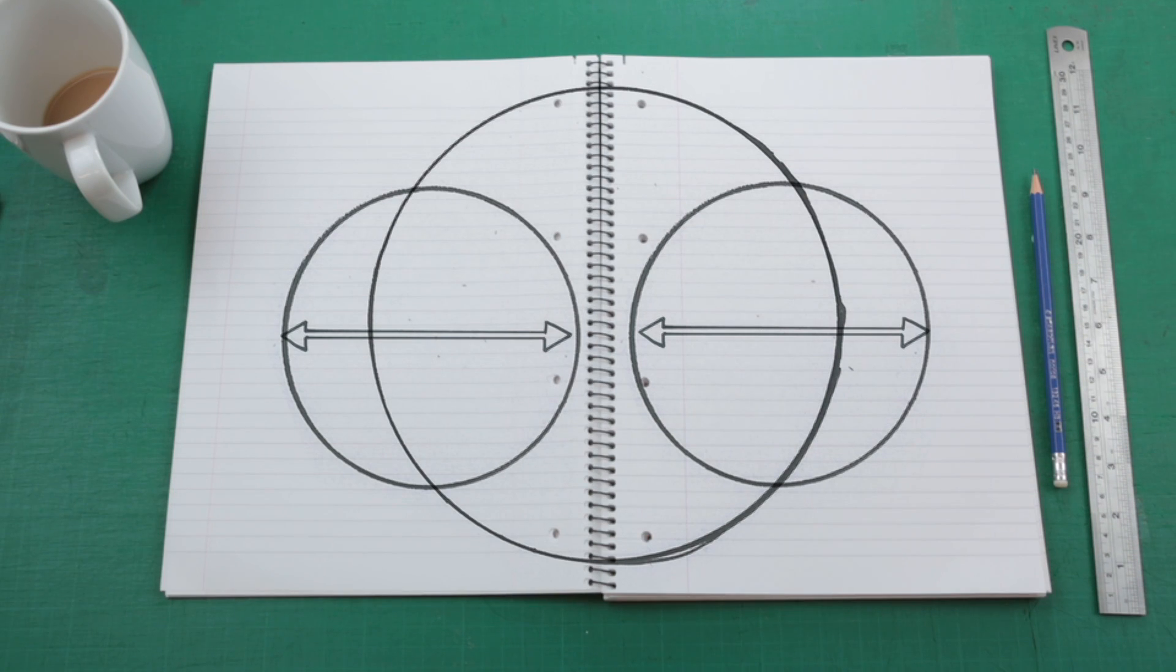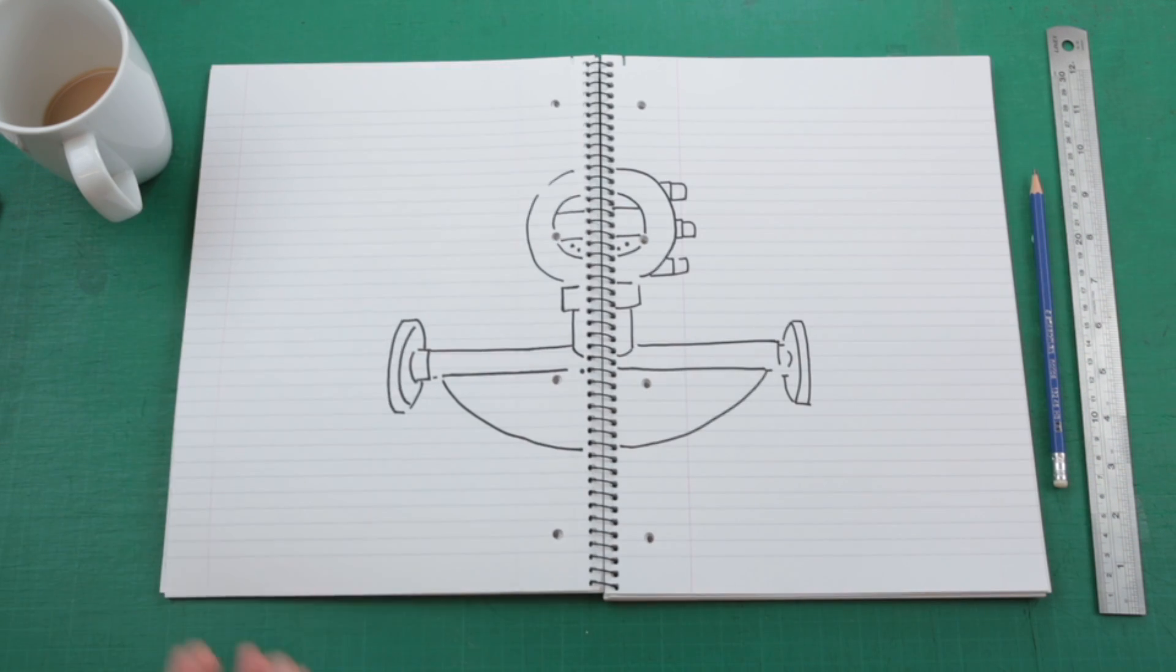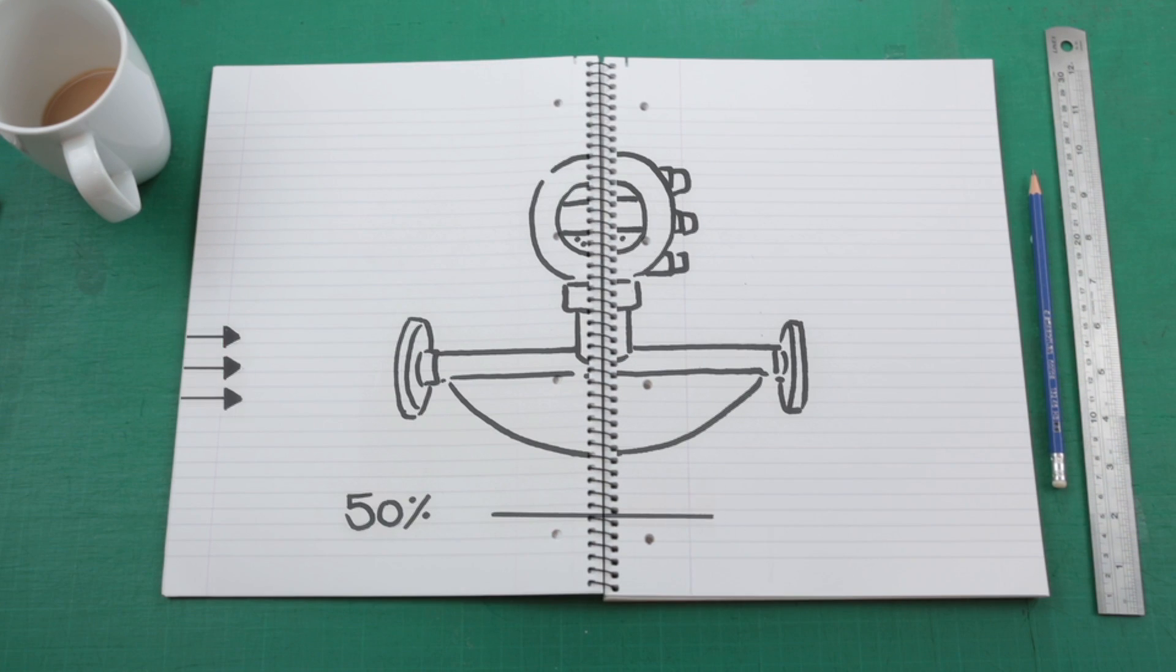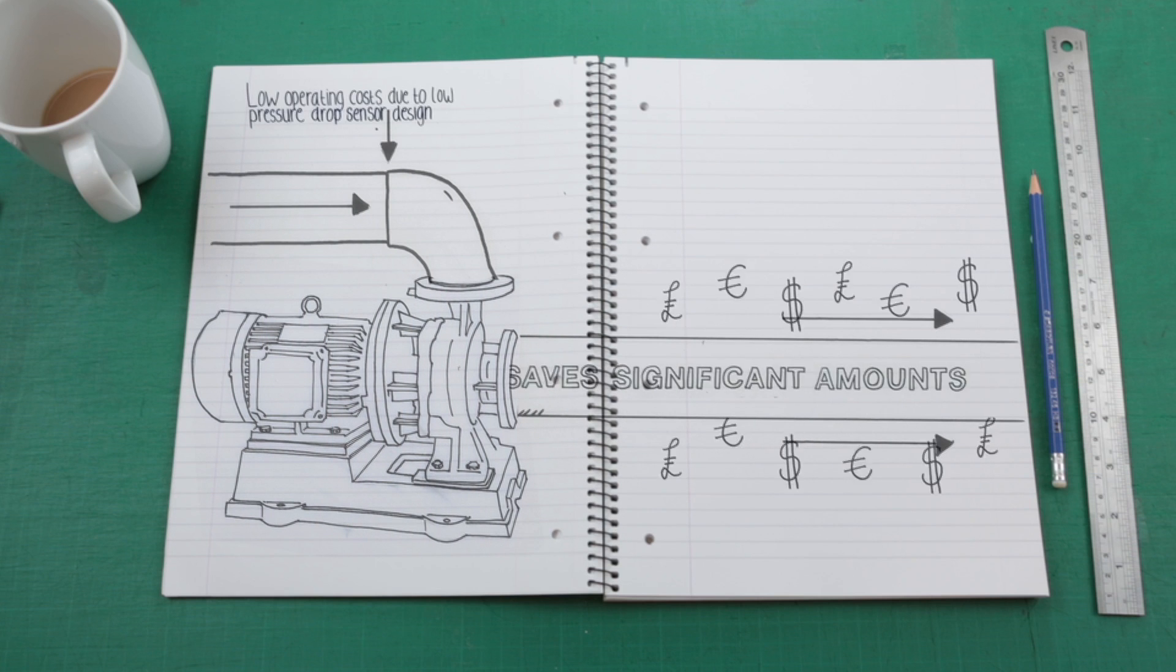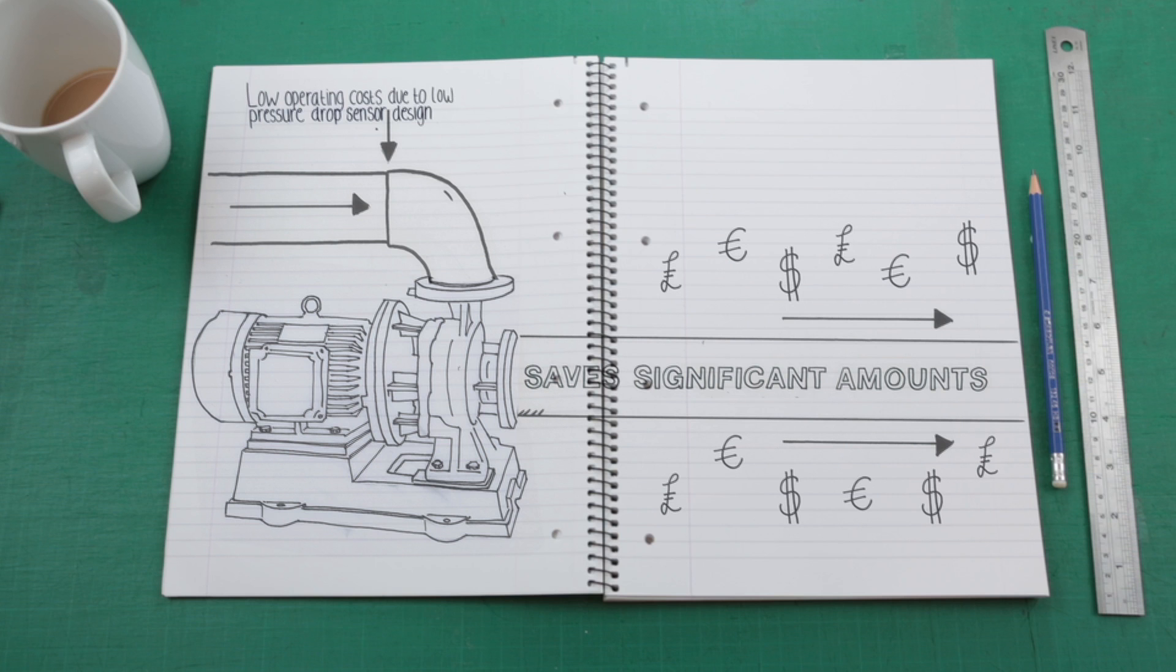The larger diameter can also reduce pressure drop by 50-90% compared to your existing meter, without compromising accuracy, even at lower flow rates. This means the Coriolis master interferes less with your process flow and saves significant amounts of pumping energy, even allowing the use of smaller pumps.